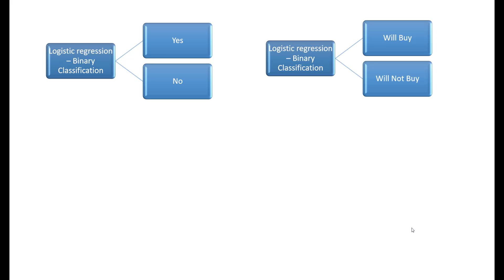In our previous video, we checked out how to build a logistic regression model that does binary classification. Binary classification predicts one of two possible outcomes — it can be either yes or no, or a decision like whether a person will buy a product or not. Based on the age of the person, we predicted whether the person is employed or not.